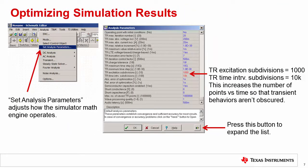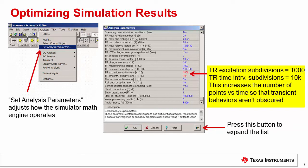SAR drive transient simulations require fine time increments to avoid obscuring important waveform information. Using the default settings in TINA may result in errors, as the number of points, or time resolution, are optimized for fast simulation time. The set analysis parameter allows you to optimize the way the SPICE math engine works. Increasing the TR excitation subdivisions to 1,000 and the TR time interval subdivisions to 10,000 will increase the number of points versus time so we don't obscure fast transient behaviors. Make sure you make this change before running the SAR simulations. Note that you will need to press the finger button at the bottom to expand the list so you can edit these parameters.